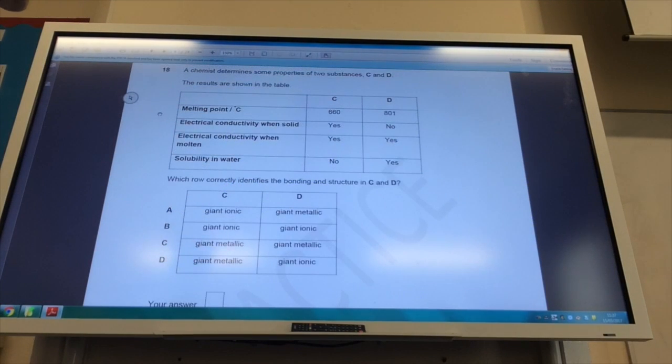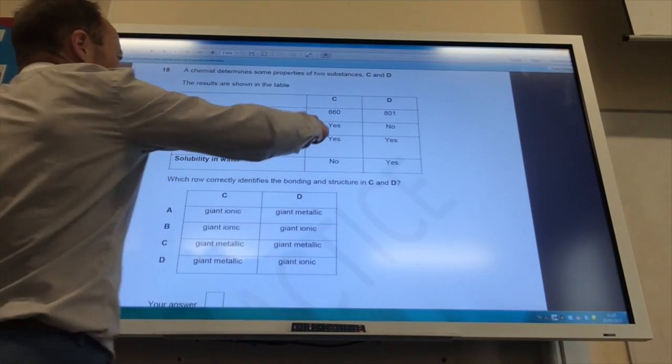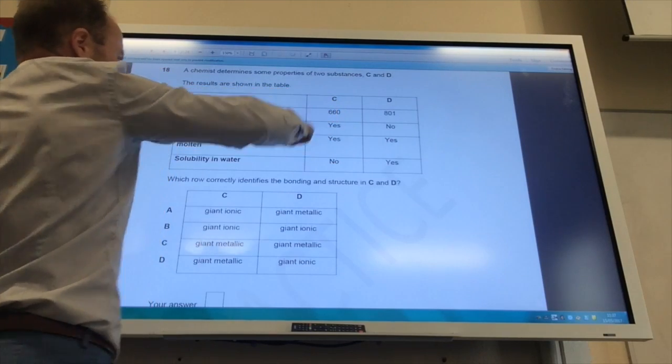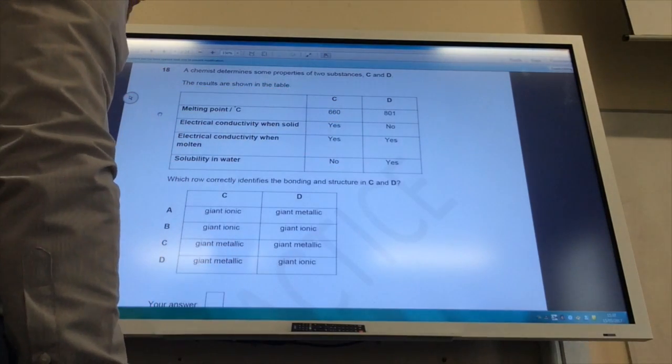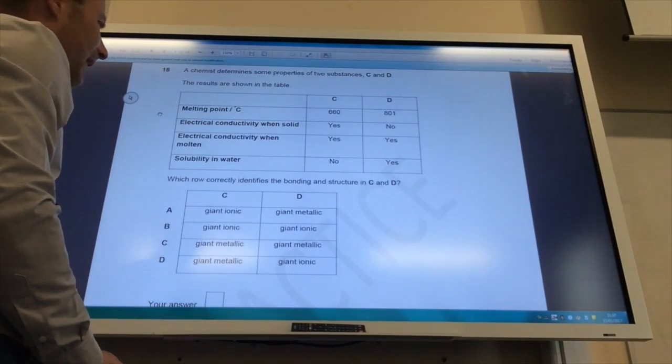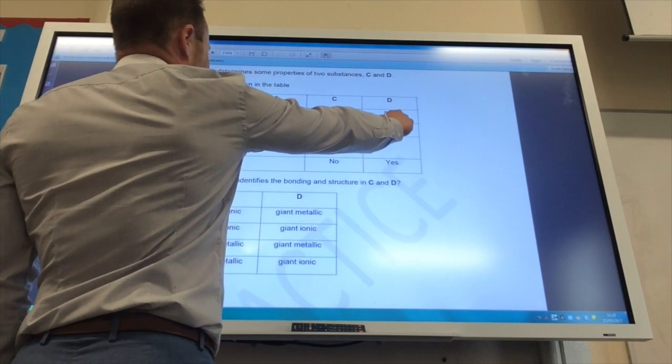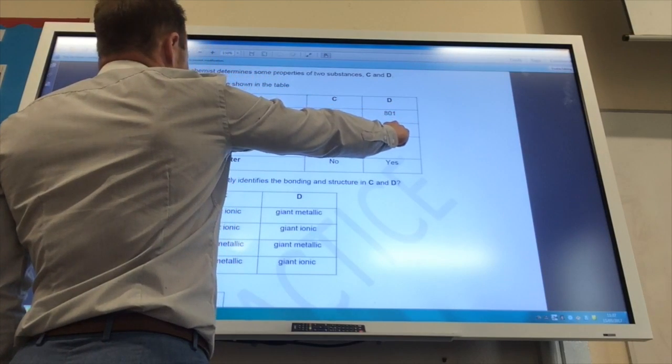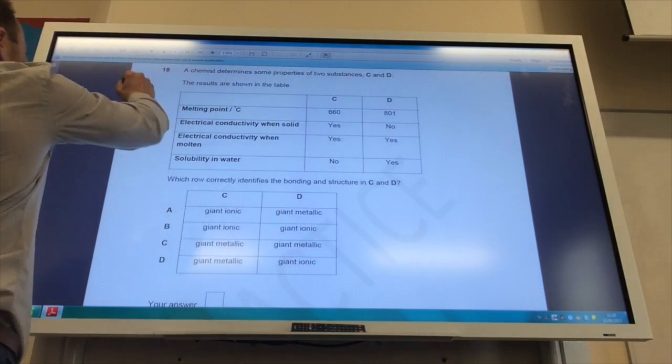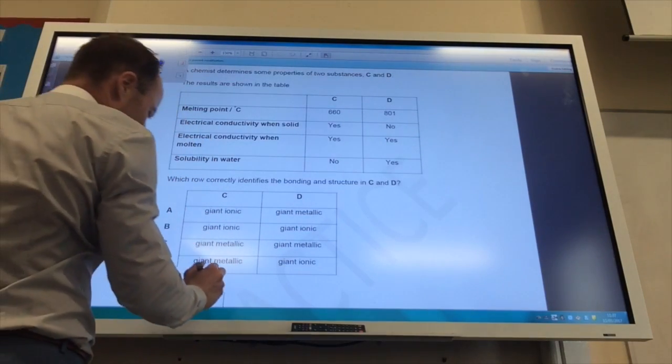A chemist determines the properties of two substances, C and D. Results are shown below, and it wants me to tell the structure and bonding. This one conducts when solid and when molten, is not soluble in water, and has a high melting point. That suggests it's going to be giant metallic. For this one, it's got a high melting point, doesn't conduct when solid, but will when molten, and is soluble in water. So that suggests it's giant ionic, so the answer to 18 is D.